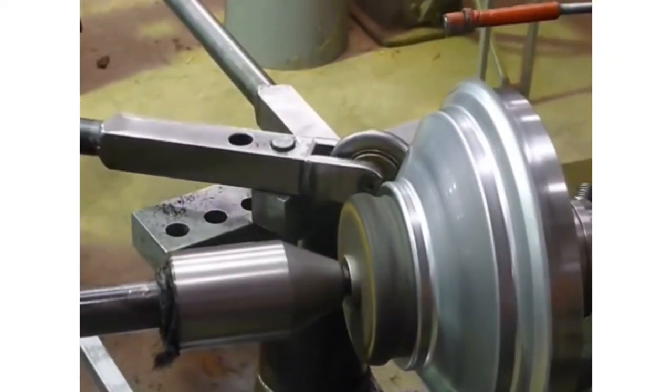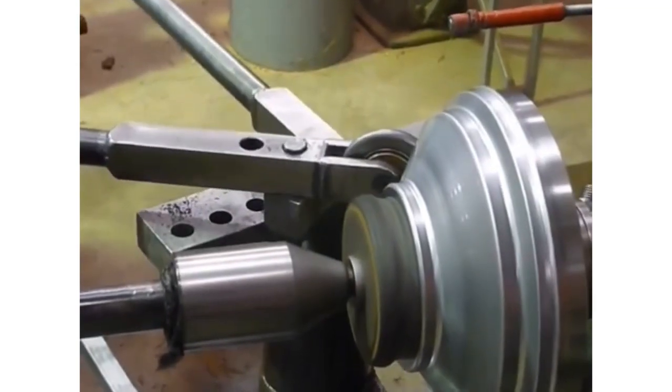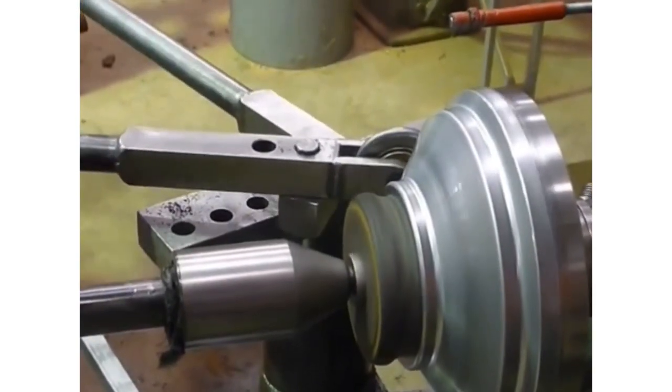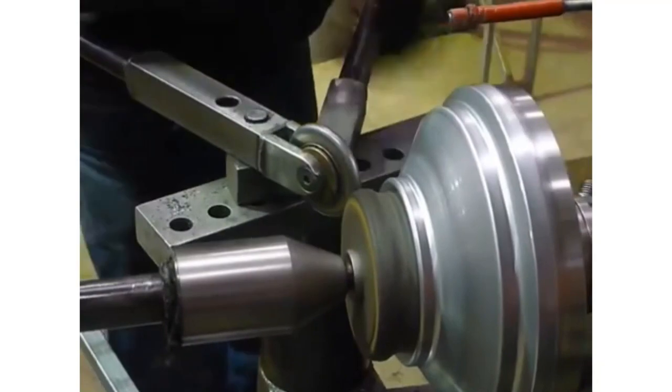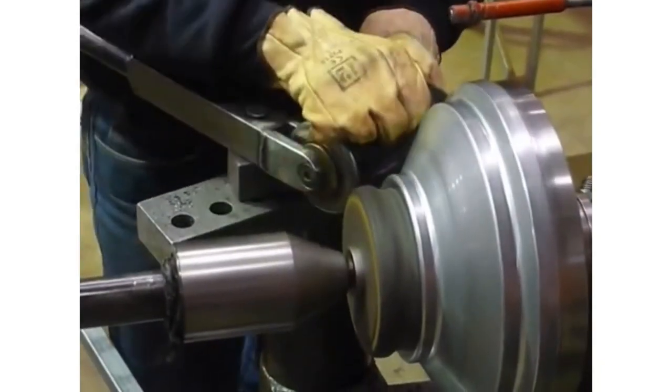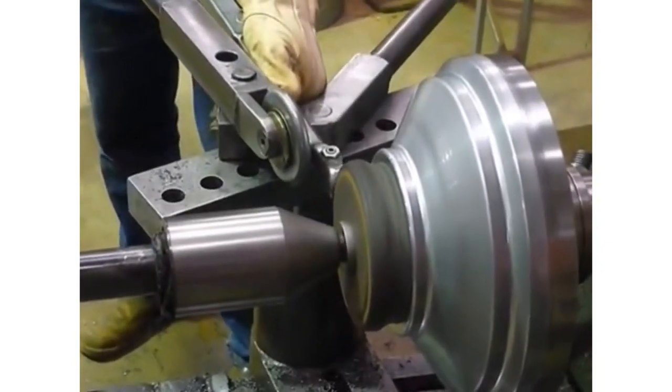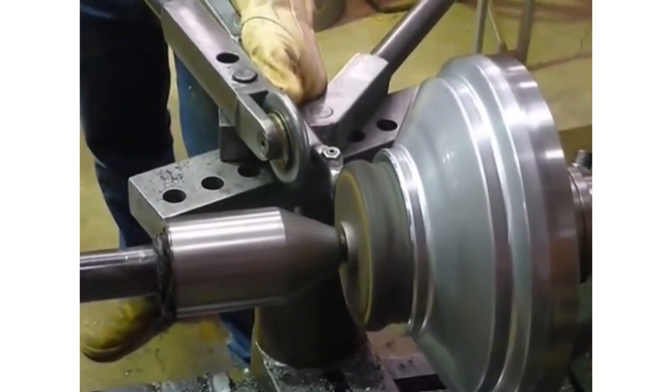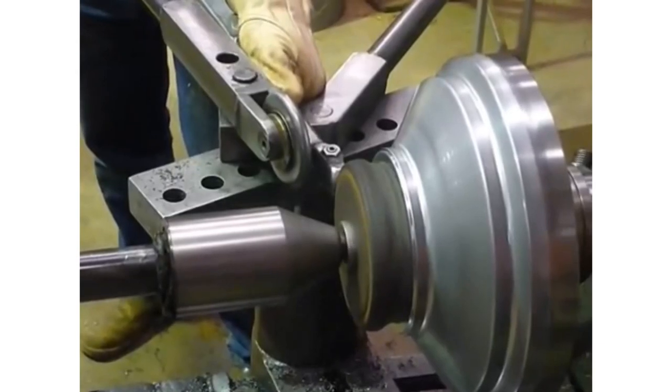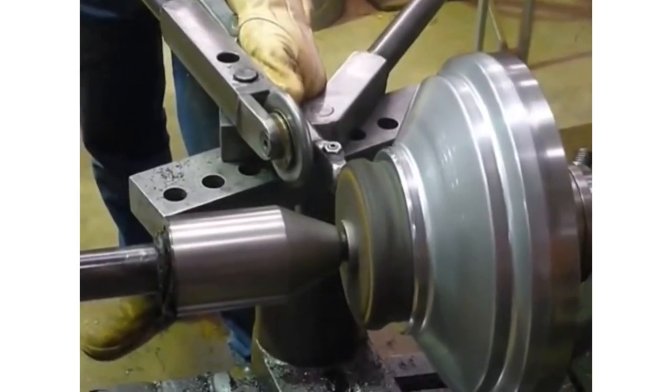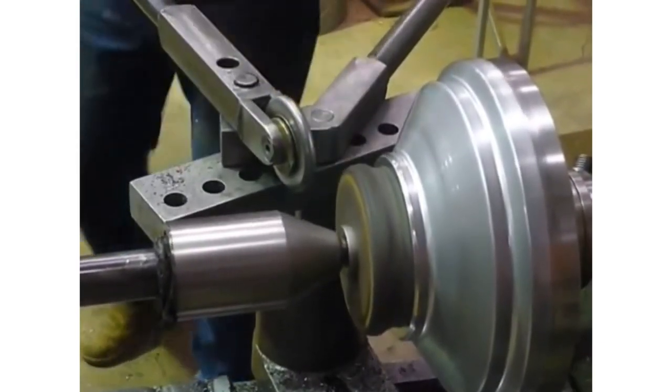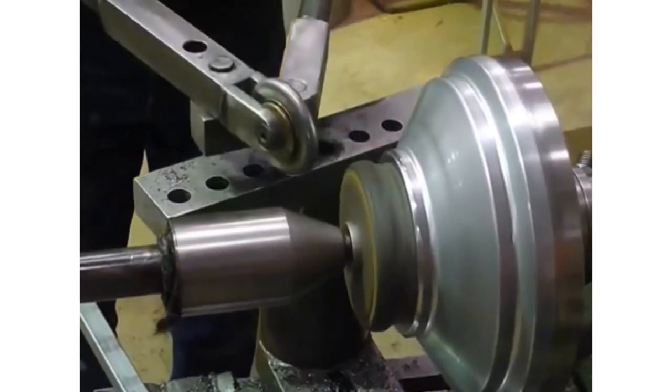The process variants are manual spinning, power spinning, and tube spinning. Manual spinning is preferred for low volume production and is generally carried out at room temperature. However, the process is carried out at elevated temperature for large thickness workpieces and workpieces having low ductility.